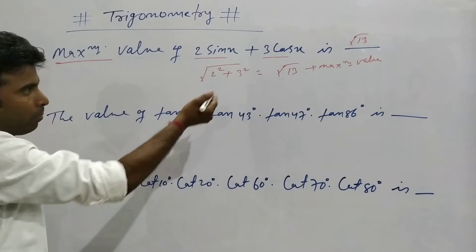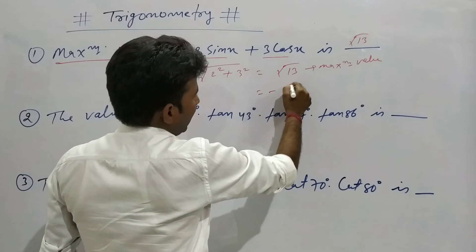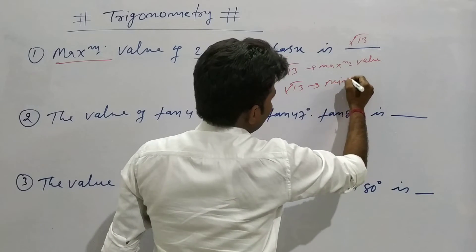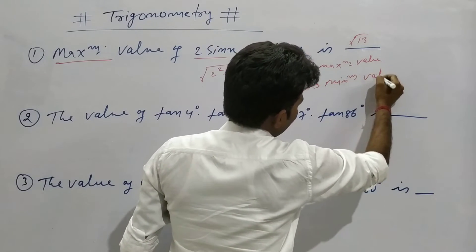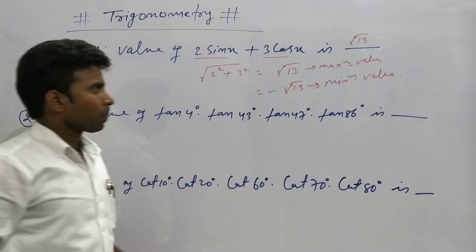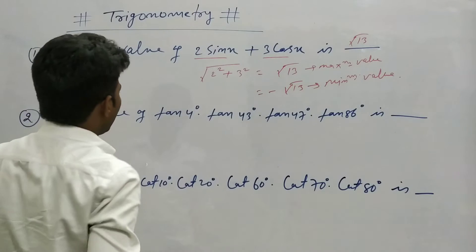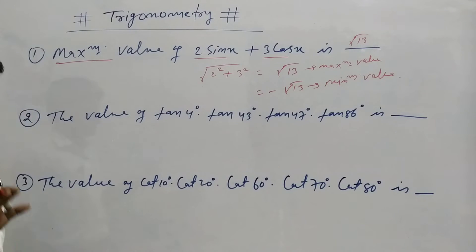If you need the minimum value, it would be minus root 13. Using the classical method would take too much time and we wouldn't have enough time. In this situation, we can solve these 3 questions quickly using tricks.